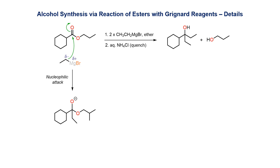In the first step, the nucleophilic Grignard nucleophile adds to the electrophilic carbon of the ester group to give a tetrahedral intermediate. In this species, the negative charge has been transferred from the Grignard carbon to a more electronegative oxygen atom. This step will be irreversible, as the newly attached carbon group is an exceptionally poor leaving group.